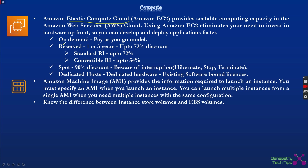There are various EC2 instance types. On-demand instances follow the pay-as-you-go model and are priced on an hourly basis. Reserved instances involve a one or three year lock-in period with AWS, providing close to 72% discount. Within reserved instances there are standard reserved instances giving 72% savings, and convertible reserved instances which allow you to convert your instance type — for example from t2.nano to t2.micro — whereas standard reserved instances don't offer that conversion option.